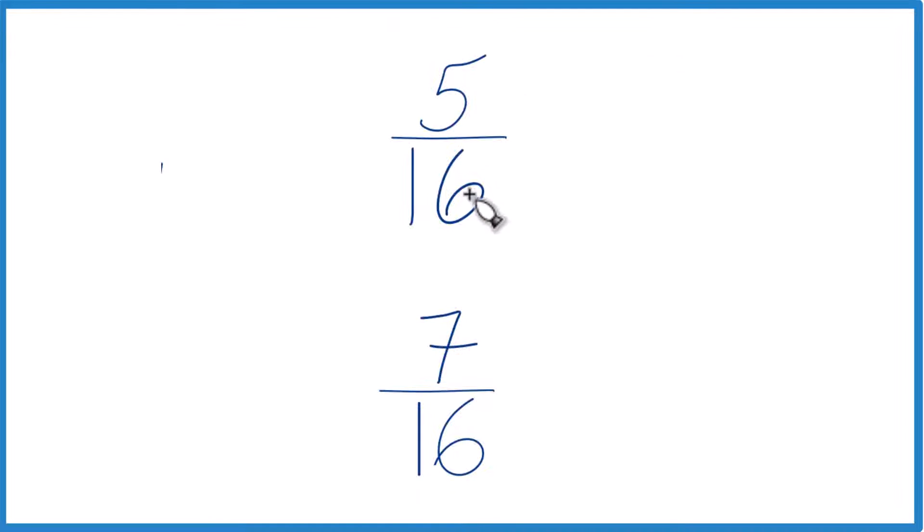One, you could just put 5 divided by 16 in a calculator, get a decimal, 7 divided by 16 and get a decimal, and you would see that 7 sixteenths is larger.